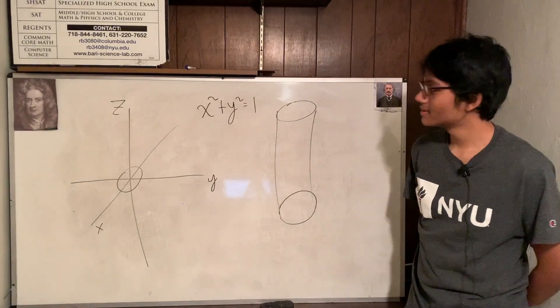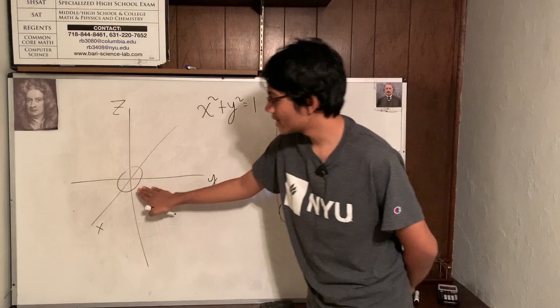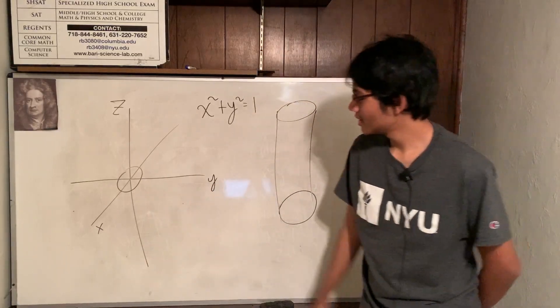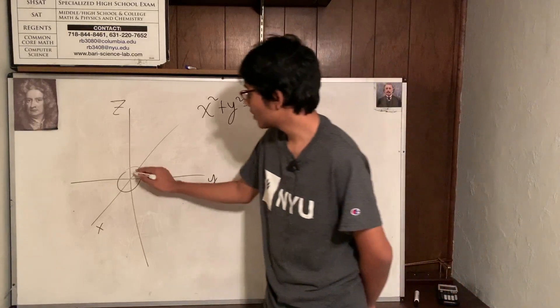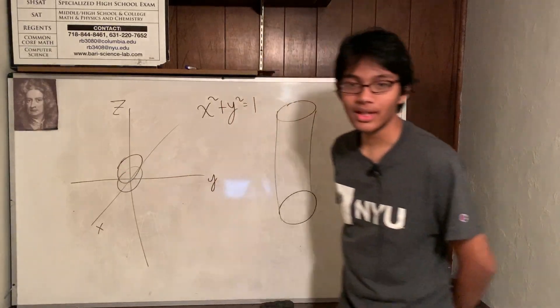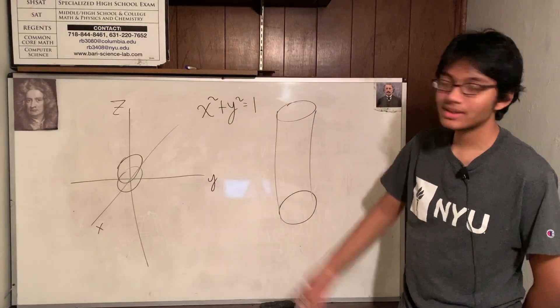But be careful. That's on the Z equals zero cross-section. What if you increase Z to be 1? Well then, you'd still have a circle, right? Because there's no Z here. Z doesn't affect this.